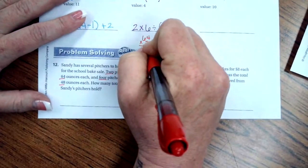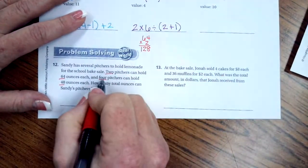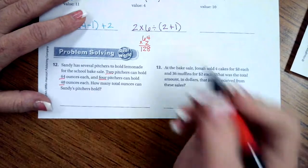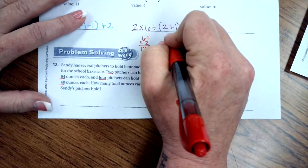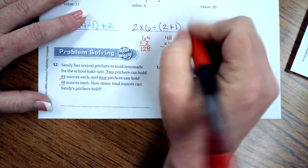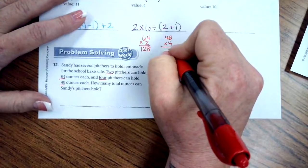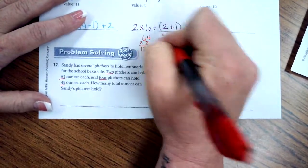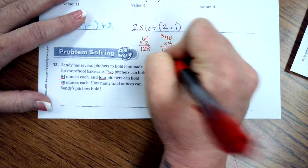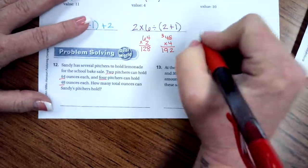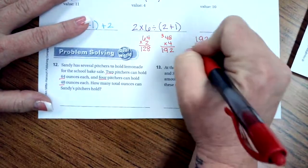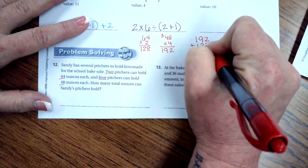So that's going to give me 128. Then I have 4 times 48. So 32, 16, 19. So 192. So now, in order to find out how much they hold all together, I need to add those two numbers together.